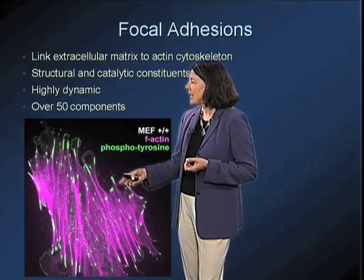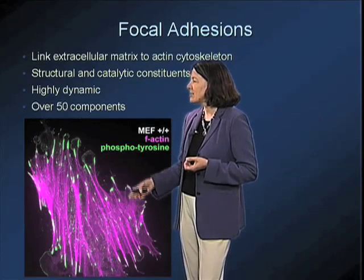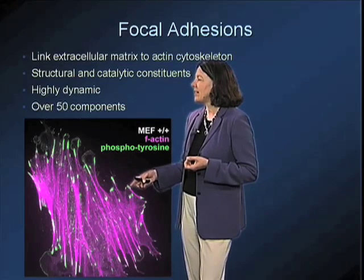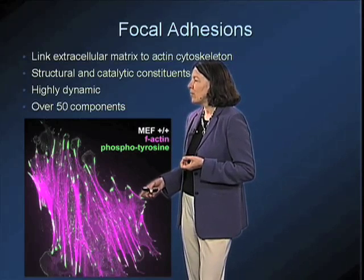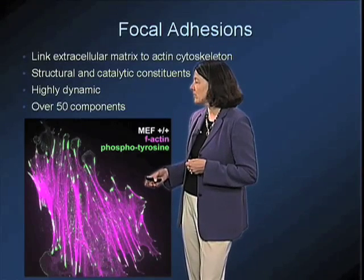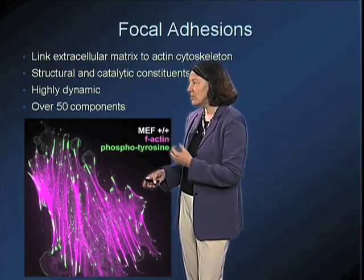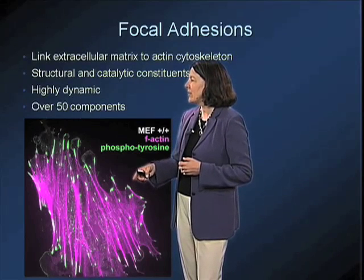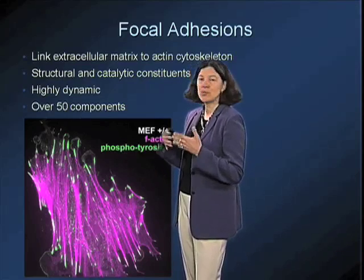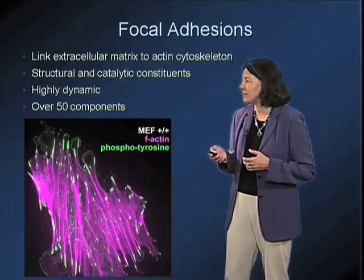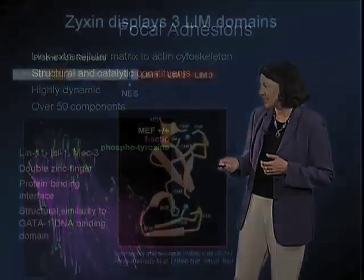Here we're labeling the cell with an antibody directed against phosphotyrosine, and you can see that these bright patches where phosphotyrosine is accumulated represent the focal adhesions, where integrins would also be concentrated, and where you can see there's a very close connection with the ends of the actin filaments, the stress fibers that terminate at these sites.